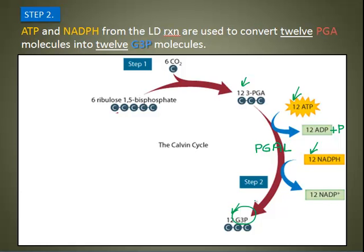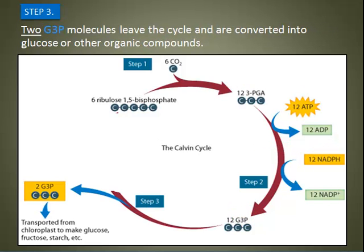So what of this G3P? Why do we spend so much energy and time making it? In step three, two molecules of G3P are going to leave the cycle and can be converted into glucose or many other organic compounds. If we have 12 G3P and take two away, we're left with 10 G3P.